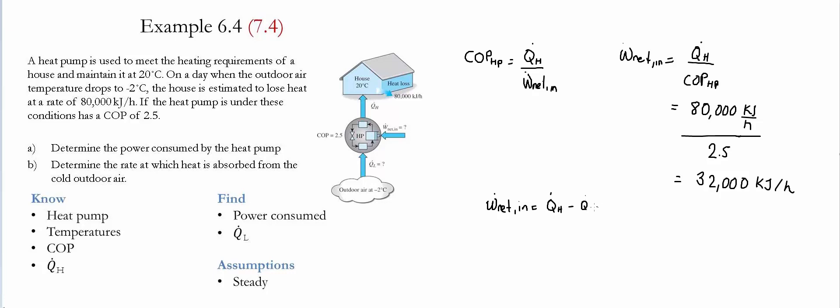That is simply the difference between the amount that is being lost minus what is being absorbed. If we solve for Q_L, it's simply Q_H minus the power. The values that we have are 80,000 kJ per hour, and the power we calculated to be 32,000 kJ per hour.